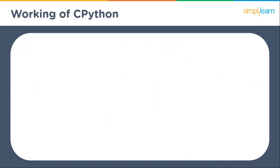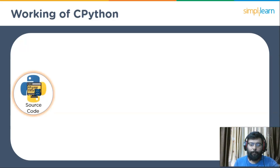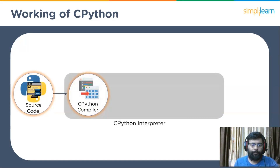Now let's understand the working of CPython. CPython ends up producing bytecode, which is Python-specific, and then executes it. The reason to convert Python code to bytecode is that it's easier to implement an interpreter if it looks like machine instructions, though it isn't necessary to produce bytecode prior to execution. The compiler first receives the source code.